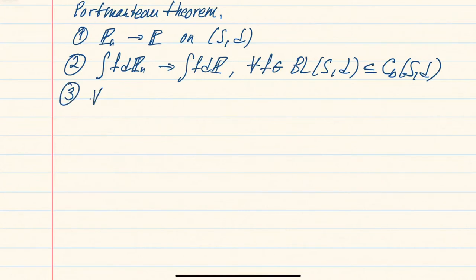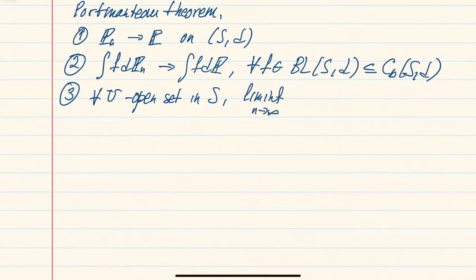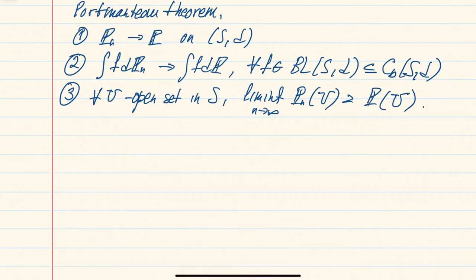The next condition is: if you take any open set in S, then the lower limit of probabilities pn of this set will be greater than or equal to the limiting probability of this set. This implication is also pretty straightforward — the indicator of an open set can be approximated by bounded Lipschitz functions from below.